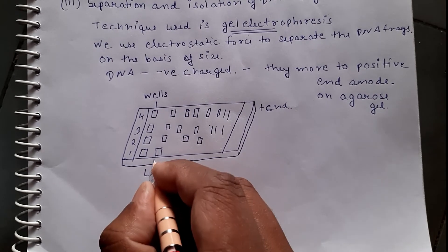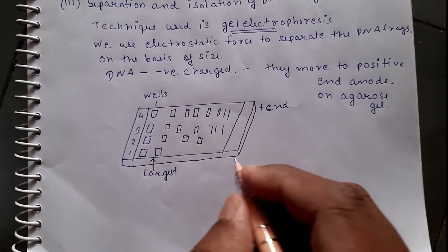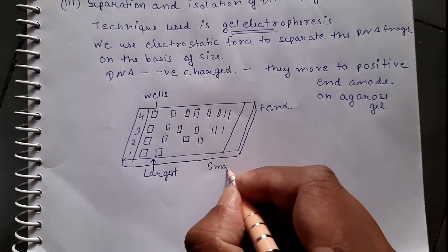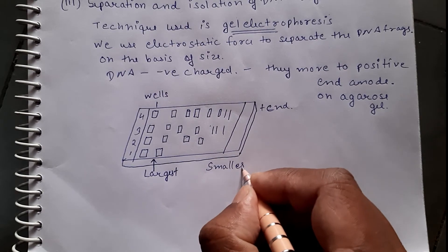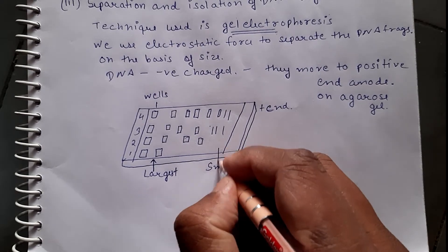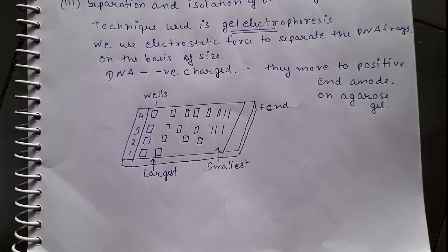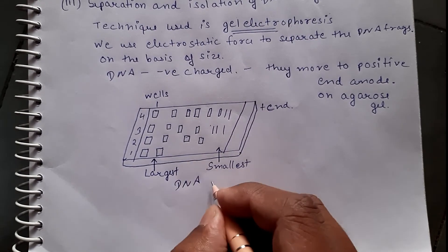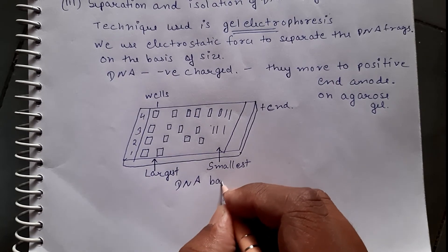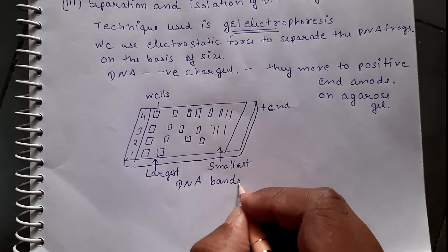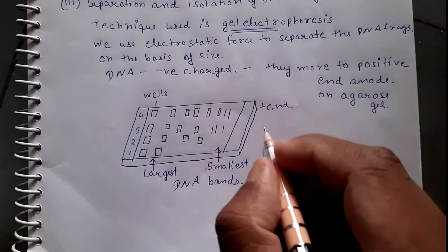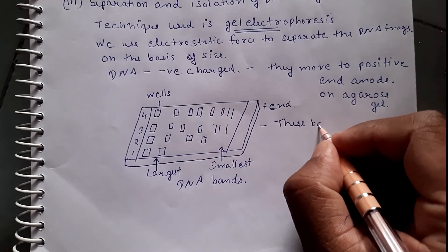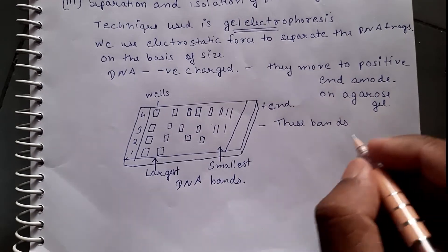In the agarose gel, the smaller DNA bands move further and the larger bands remain at the initial stages. The largest bands are at the start and the smallest bands move furthest due to their small size.